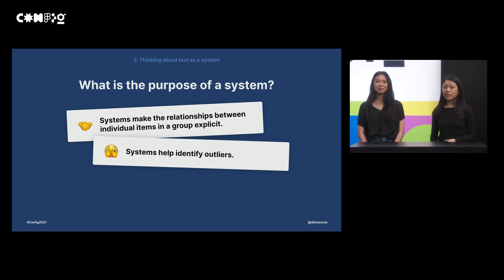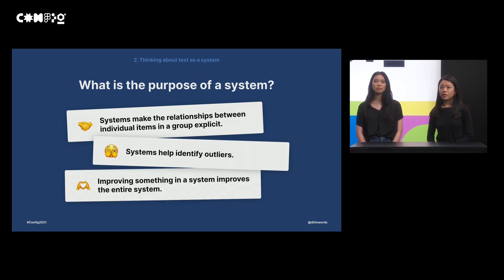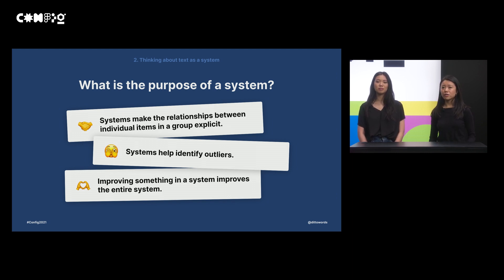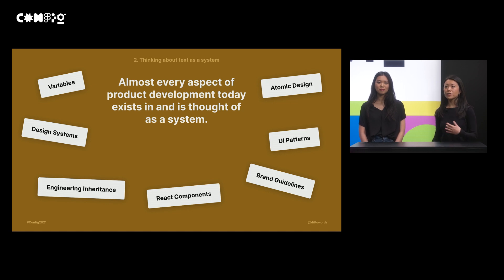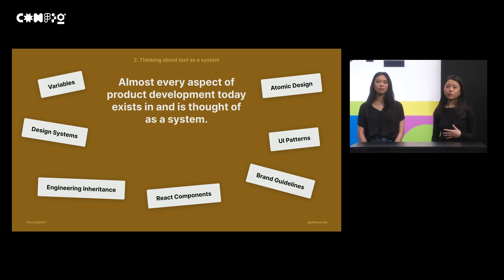Second, systems help identify outliers. As things grow and scale, things don't always fit into existing patterns. Systems help identify outliers in your existing structure and how to grow your system to fit new constraints. And lastly, improving something in a system improves the entire system — rather than one-off changes that exist in isolation, making changes to a system improves it as a whole. Almost every aspect of building product today exists in and is thought of as a system. Just a small handful of examples include design systems, UI patterns, React components, variables, constants, and inheritance in engineering.